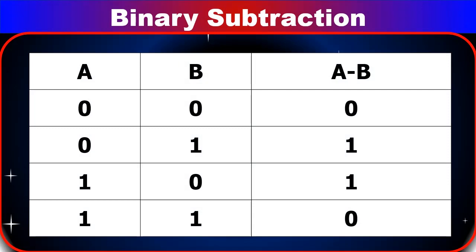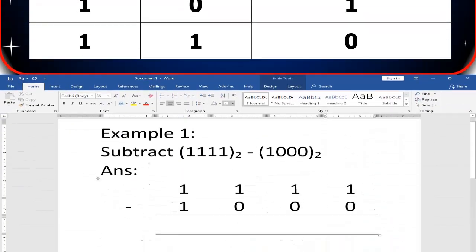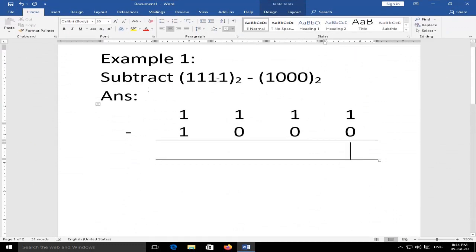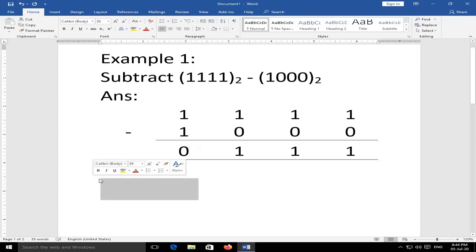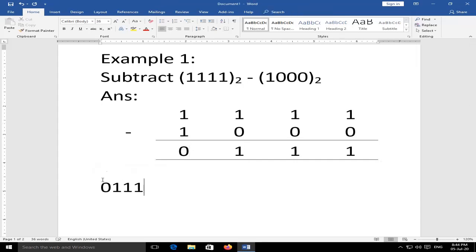Binary subtraction rules: 0 − 0 = 0. When 0 − 1, we cannot subtract 1 from 0, so 1 is borrowed from the left side, making it 10, and 10 − 1 = 1. Also: 1 − 0 = 1 and 1 − 1 = 0. Example: 1111 − 1000: 1−0=1, 1−0=1, 1−0=1, 1−1=0. Answer: 0111 (base 2), or simply 111 (base 2).